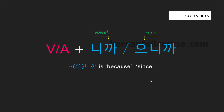So, the first grammatical construction is 니까 / 으니까. You can use it with verbs and adjectives. If a verb or adjective stem ends with a vowel, you should use 니까, and if it ends with a consonant, you need to use 으니까.